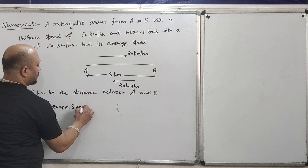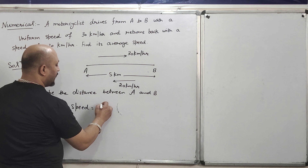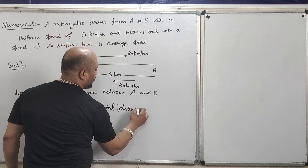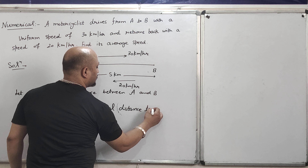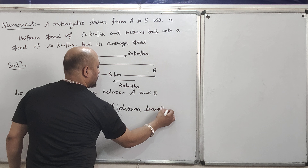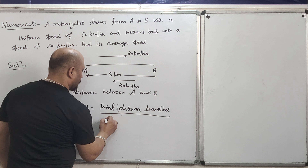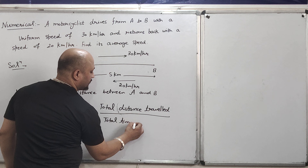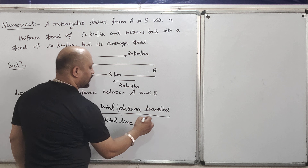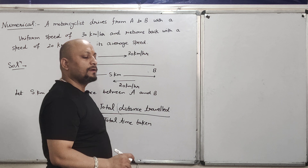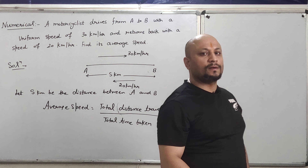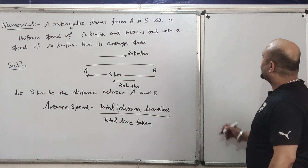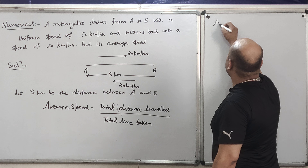Now, what is average speed? As per formula, average speed is total distance travelled divided by total time taken. To calculate the average speed, we will apply this formula carefully.